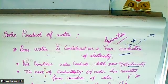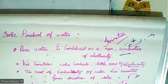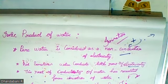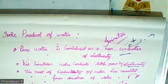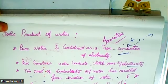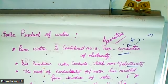Good morning students. This is 10th science lab. Today we are going to learn the topics ionic product of water and pH value in the lesson of types of chemical reaction. First topic is ionic product of water.